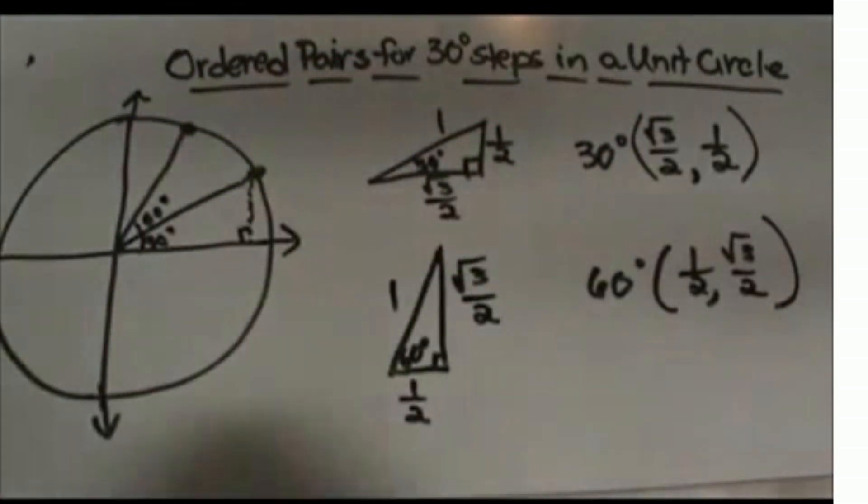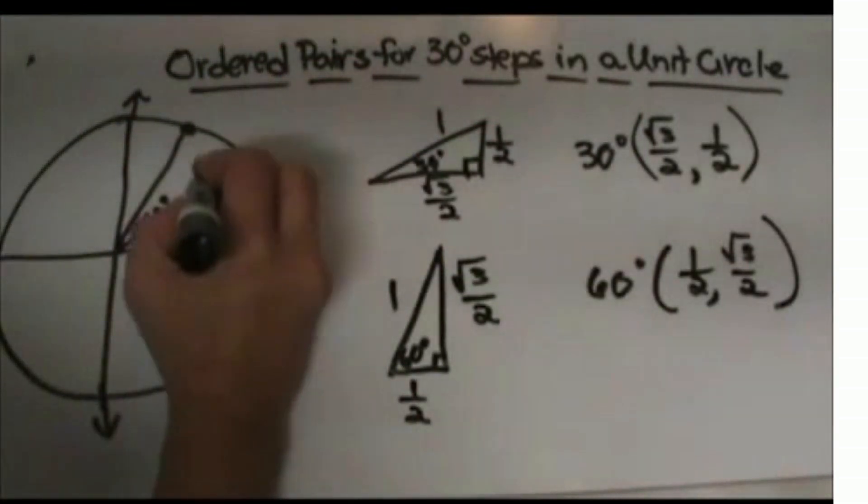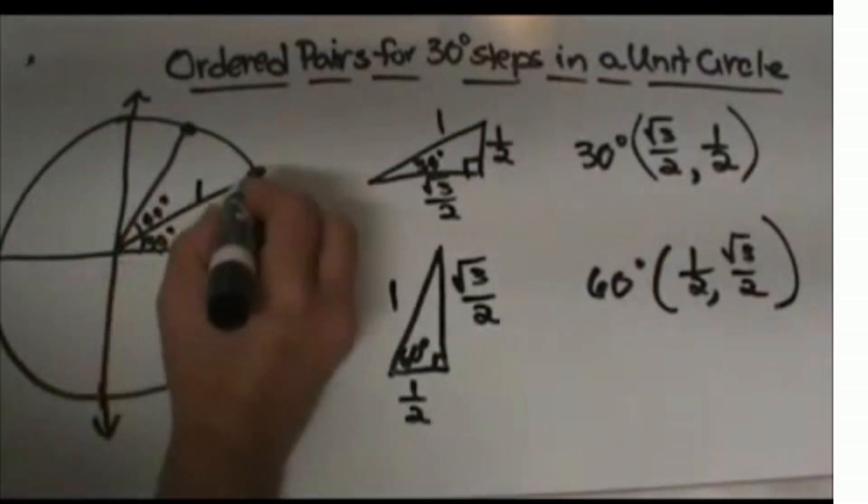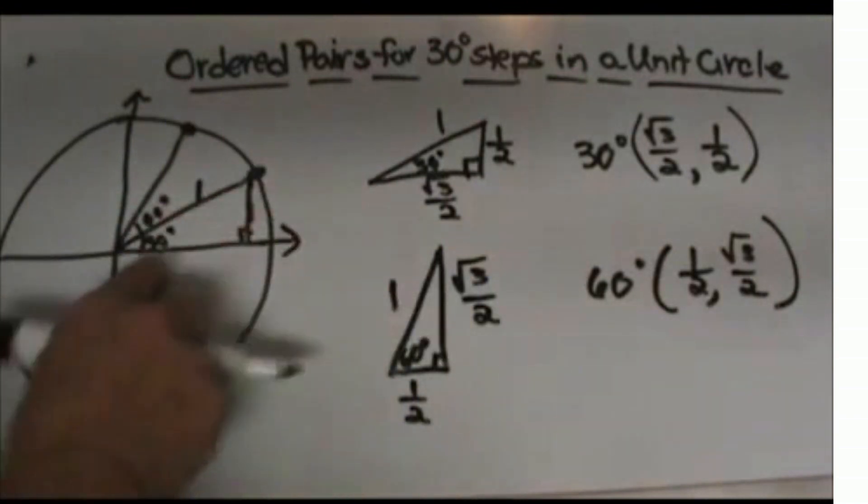Let's start off with our unit circle. If you remember, the radius is 1. When I draw in my 30 degree angle, I'm going to extend that side down and create a 30-60-90 triangle.